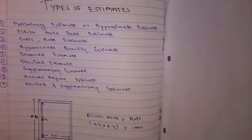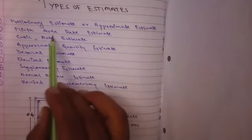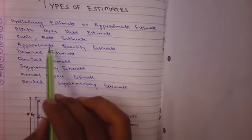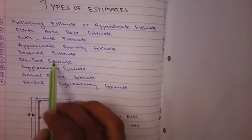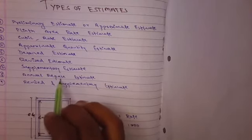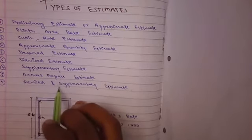...total nine types of estimates: preliminary or approximate estimate, plinth area rate estimate, cubic rate estimate, approximate quantity estimate, detailed estimate, revised estimate, supplementary estimate, annual repair estimate, and revised supplementary estimate. Now we will look at all these...